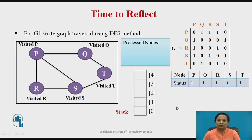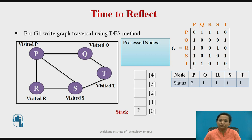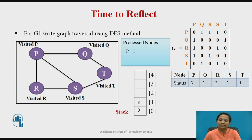Let's see the solution. The adjacency matrix representation for graph G1 is shown, and the status of all nodes is initialized to 1. Starting traversal with node P: push P onto the stack, status changes from 1 to 2. Stack is not empty — pop P, process it, status changes from 2 to 3. Adjacent nodes of P are Q, R, S. These are pushed onto the stack and their statuses change from 1 to 2. Stack is not empty — pop S. Node S is processed; status changes from 2 to 3.